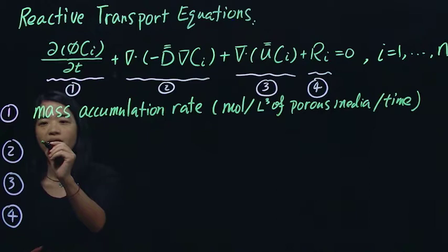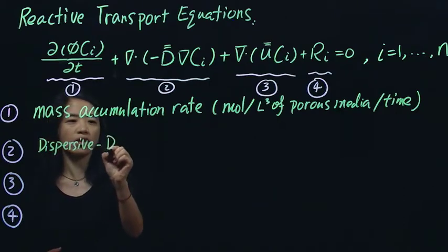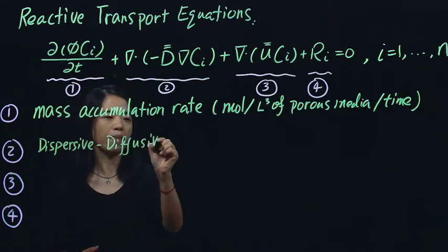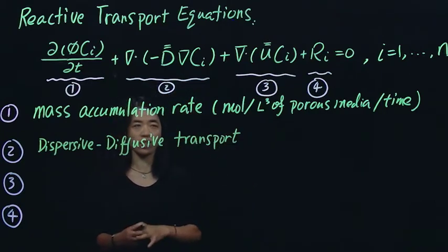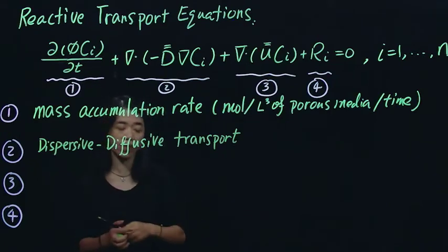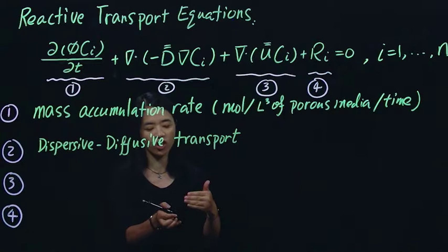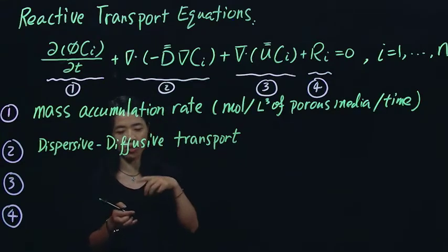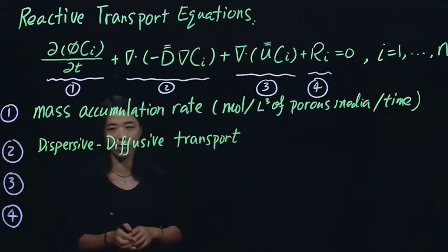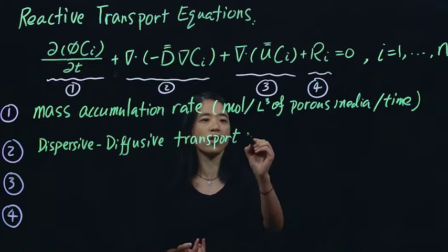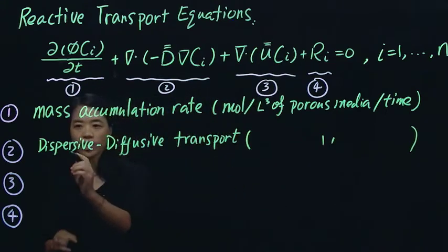The second term is what we call dispersive and diffusive transport. So you think about how a chemical species in water, how they change over time, which is this. So some of these rates come from, for example, the chemical species getting like there's different concentrations in different locations. For example, you think about a dye put in a cup of water and they tend to, over time, have the same color everywhere. So this is one of the driving forces in terms we call diffusive or dispersive transport. And they should have the same unit as the first term. Every term has the same units.